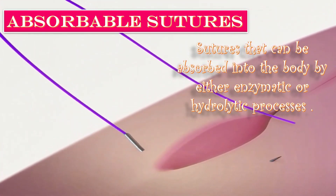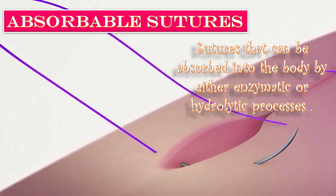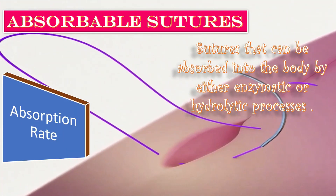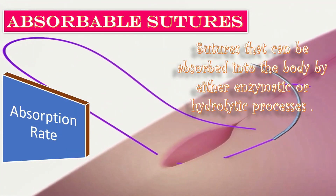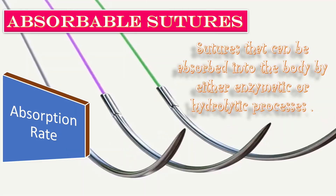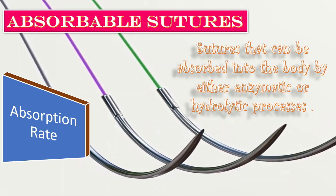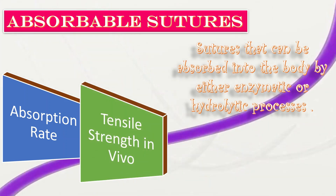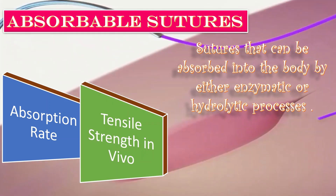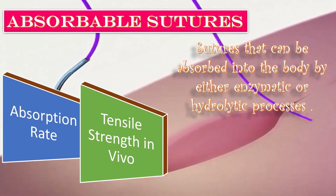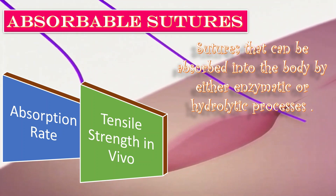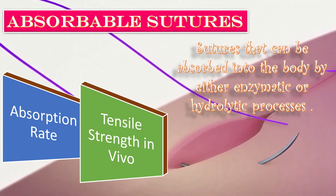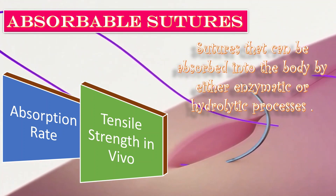To understand absorbable sutures, we study two properties. First is the absorption rate, which is the length of time required for the suture to be absorbed into the tissue. Second is tensile strength in vivo, which is the amount of tension or pull expressed in pounds that a tissue will withstand before it breaks inside the tissue.